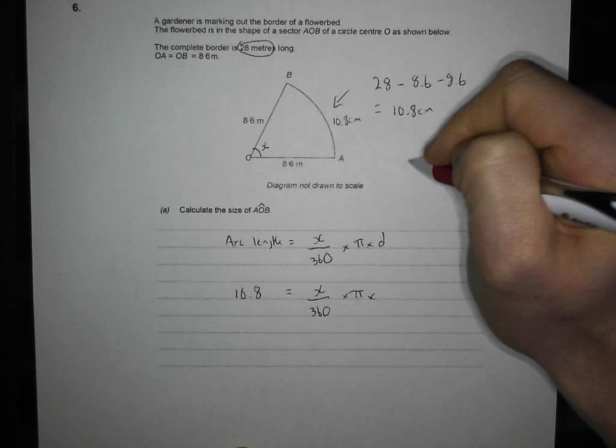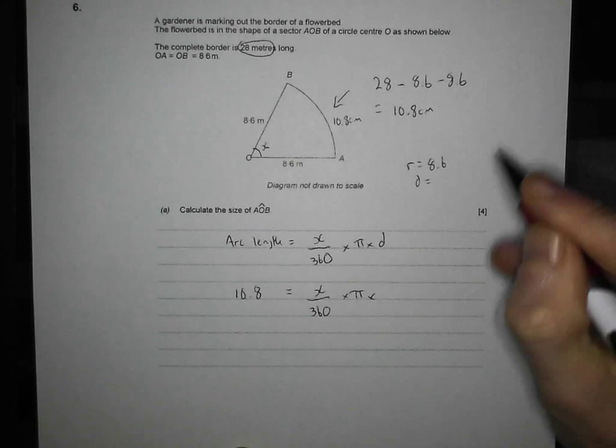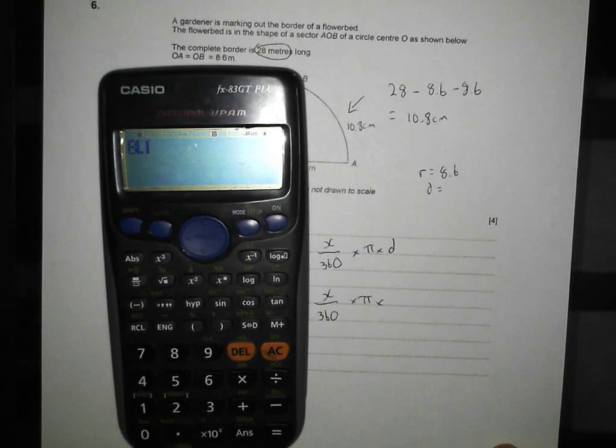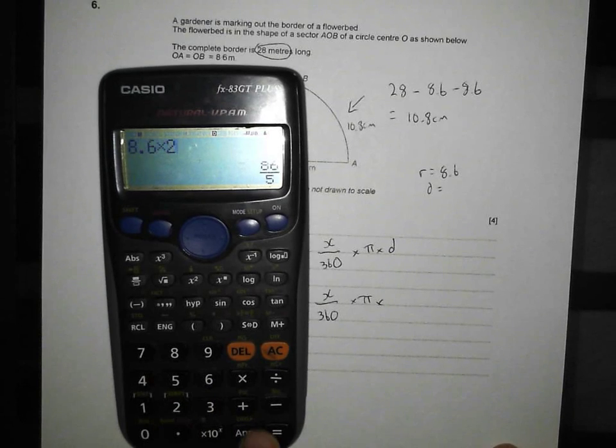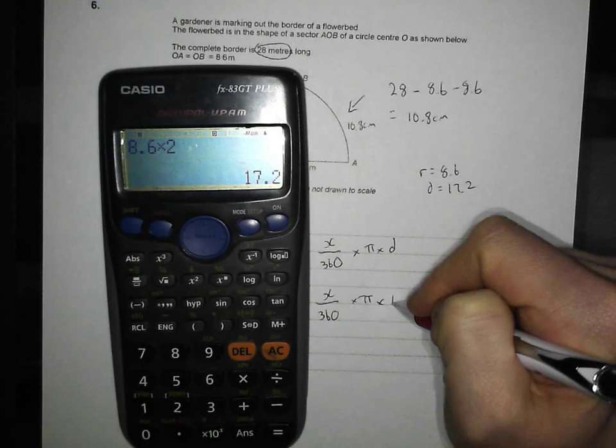So if my radius is equal to 8.6, my diameter must be equal to 2 lots of 8.6. And if you want to be certain you're getting that right, because you don't want to make a mess at this stage, times that by 2, press your SD, and you're going to get 17.2. So 17.2.